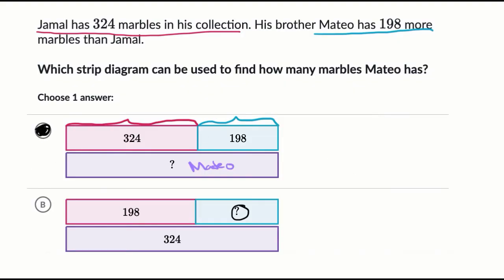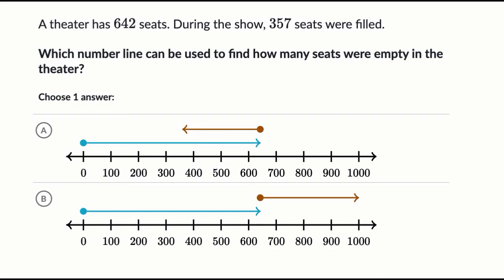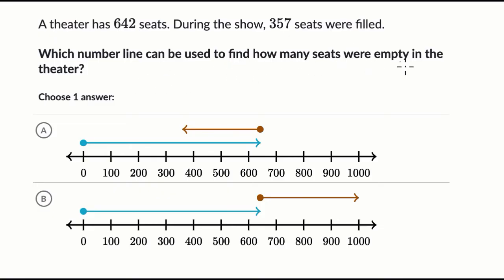Let's do another one, but this time let's use number lines. A theater has 642 seats. During the show, 357 seats were filled. Which number line can be used to find out how many seats were empty in the theater?